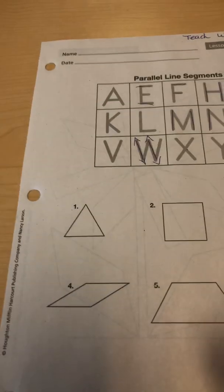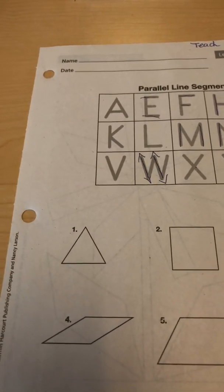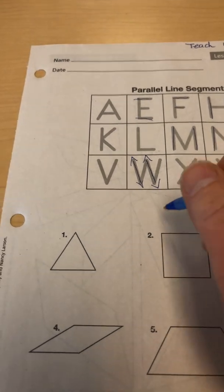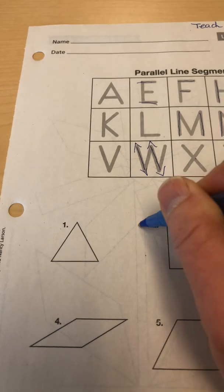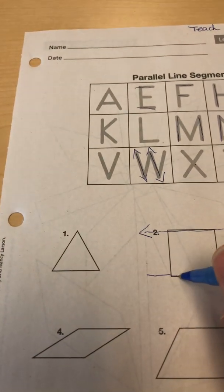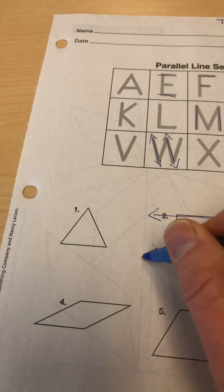And on these ones, they want you to show which ones are parallel. Okay, so on two, if you were to extend this out, this line is parallel with the horizontal line on the bottom line.